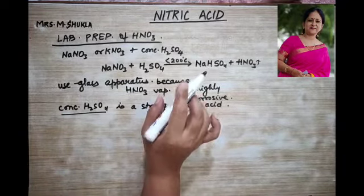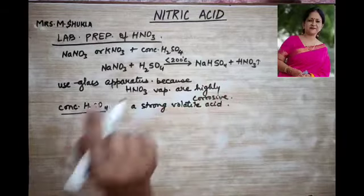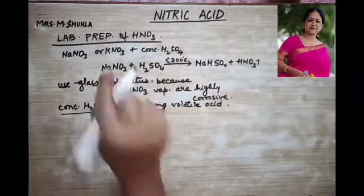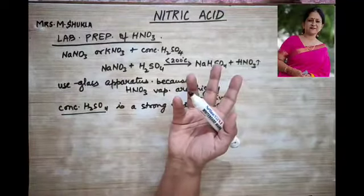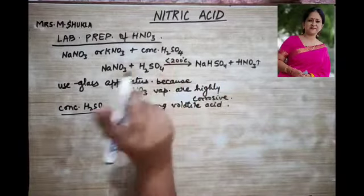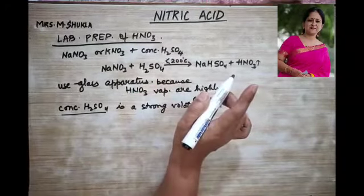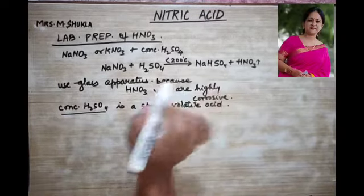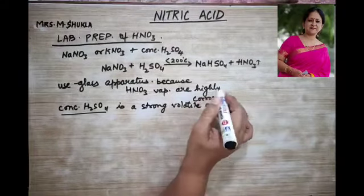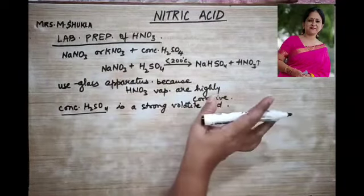We do not use concentrated hydrochloric acid because it is itself a volatile acid. A volatile acid cannot be used to produce another volatile acid — it would add as an impurity to the nitric acid. We use only glass apparatus because nitric acid vapors are highly corrosive and immediately attack rubber or cork.